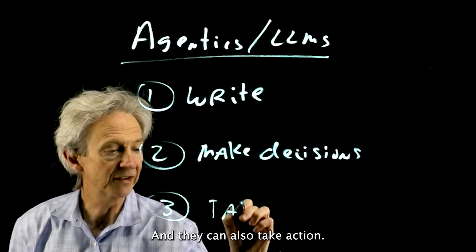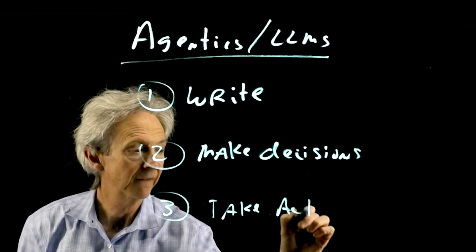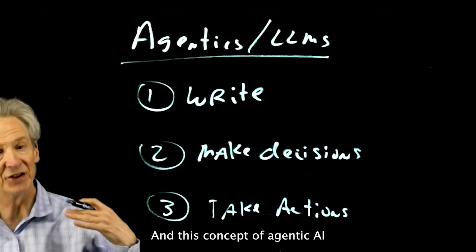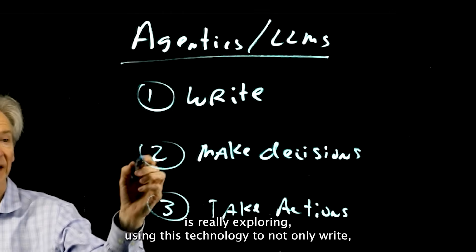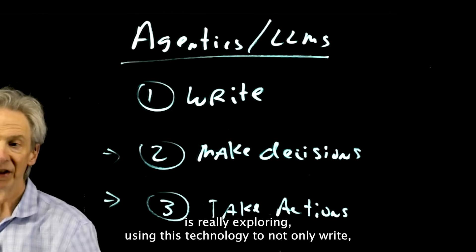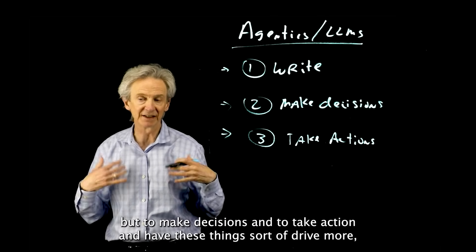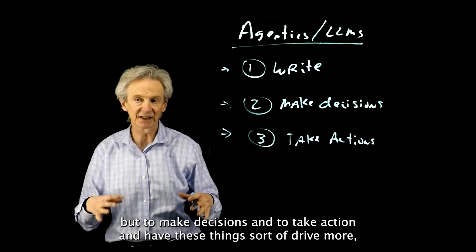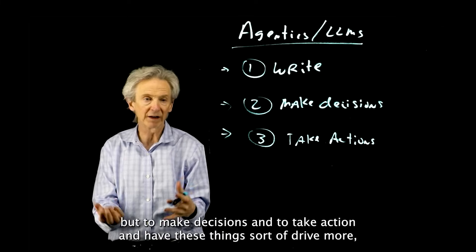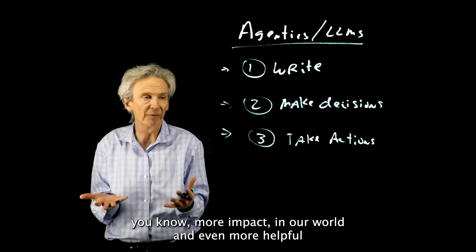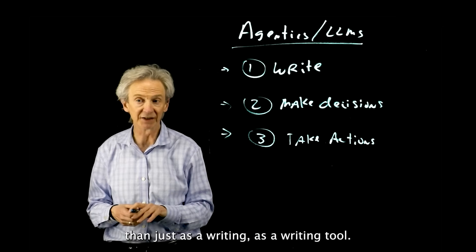They can also take action. This concept of agentic AI is really exploring using this technology to not only write but to make decisions and to take action and to have these things drive more impact in our world and be even more helpful than just as a writing tool.